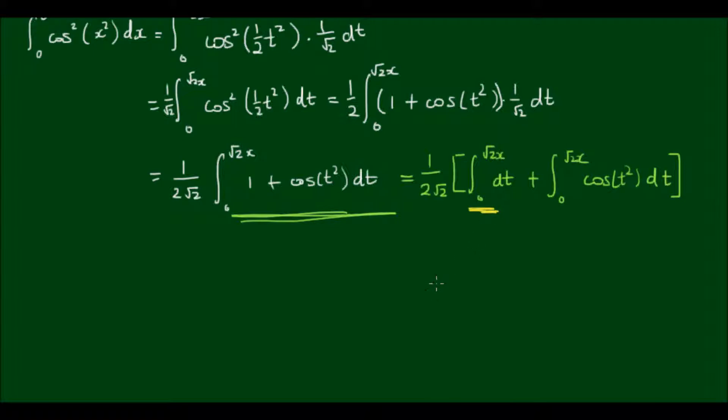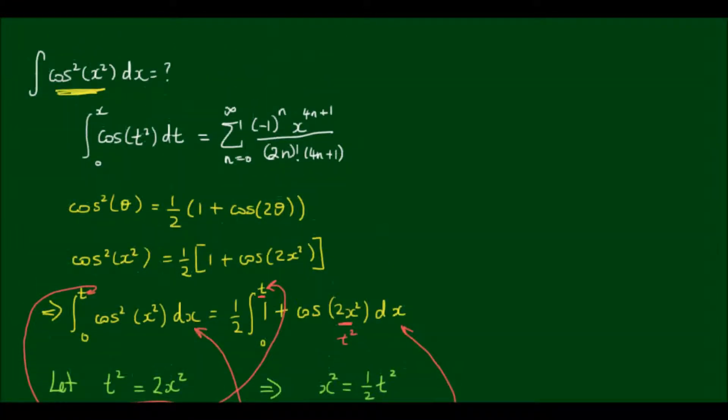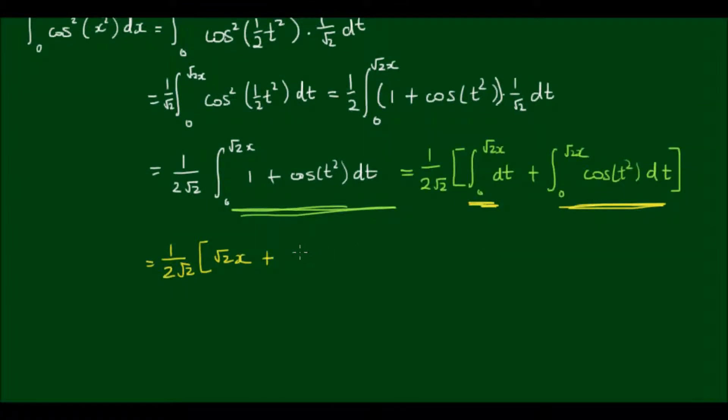This first integral is very easy to evaluate. It simply integrates to t and bounded by root 2x at the top and 0 at the bottom, so it just equals root 2 of x. So if I write that down we'll have 1 on 2 root 2 outside of root 2x plus this part. Well, we can copy the expression from the very top, so that's simply the sum from n equals 0 to infinity of (-1)^n of t to the power of (4n+1) all over (2n)! times (4n+1), and that's bounded by root 2x at the top and 0 at the bottom.